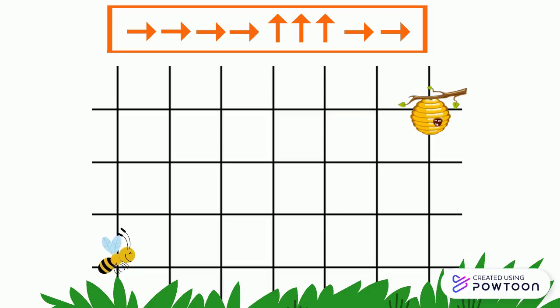First, the bee will move 4 squares to the right. 1, 2, 3, 4.